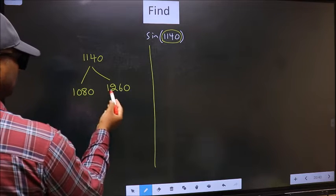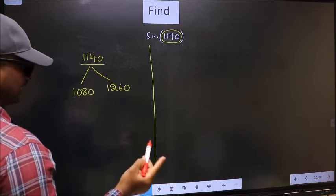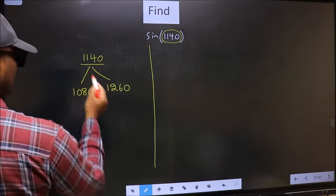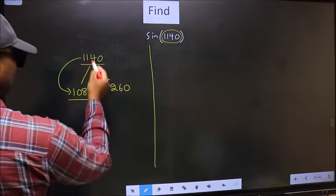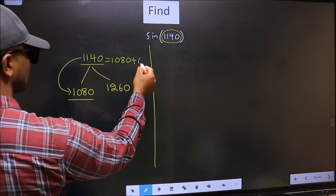Between these two numbers, 1140 lies. Next, this number is close to which number? This is close to 1080. So this number now should be written as 1080 plus 60.